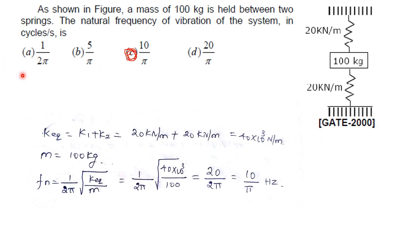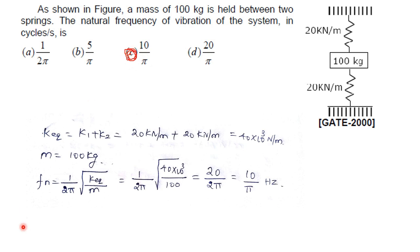Gate 2010 question: a mass of 100 kg is held between two springs each with stiffness 20 kN/m. The natural frequency in cycles per second is? Parallel connection: k_equivalent = 20 + 20 = 40 × 10³ N/m. f_n = (1/2π)√(40000/100) = 20/(2π) = 10/π Hz. Answer: option C.